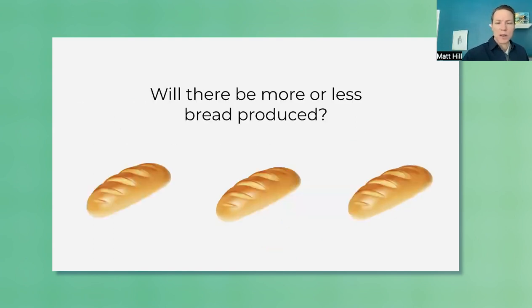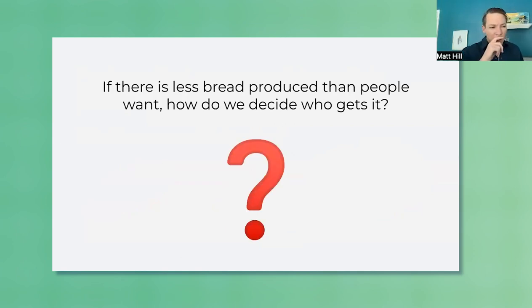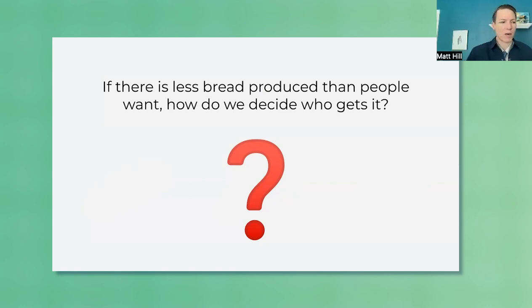Then say, all right, let's say we implement this policy. Let's think through the ramifications. Is there going to be more bread produced or less bread produced? Let the students talk. Theoretically, they should get that there'll be less bread. Now that bread is cheaper, producers have less incentive to produce it, so we have less bread. Okay, and then go to this slide and say, okay, so now that we have less bread, how do we decide who gets it? There's going to be more people that want bread than there is bread. Students may have a variety of answers here.